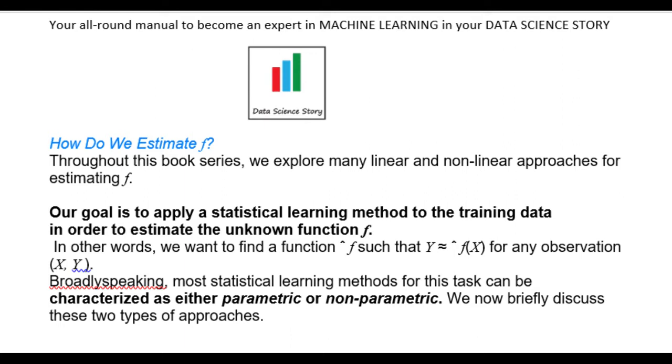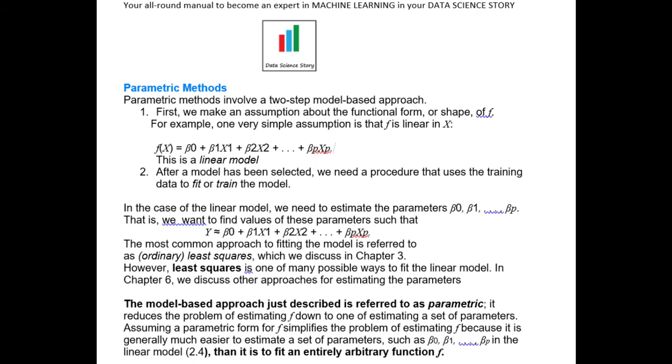So broadly there are two basic approaches that are used for this. One is parametric methods and the other is non-parametric methods. Parametric methods consist of a two-step model-based approach. The first step is model selection. In this we assume the model that best describes the shape of the relationship between X and Y.